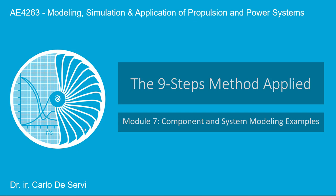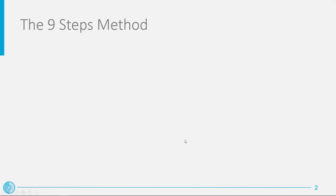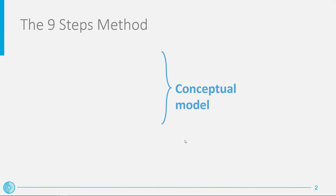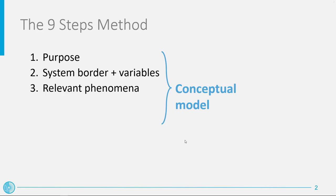Let me start by briefly recalling the basics of this method. We can distinguish mainly three phases in the development of a system model. The first one consists in defining a conceptual model of the system under consideration. The operations to accomplish this task are the definition of the model purpose, the identification of the boundary of the system, its main process variable, and its relevant phenomena.